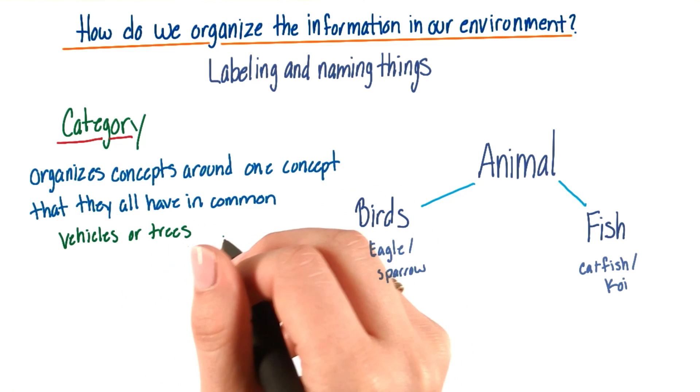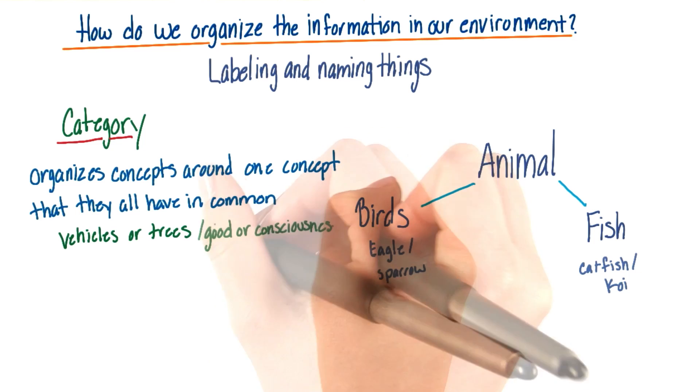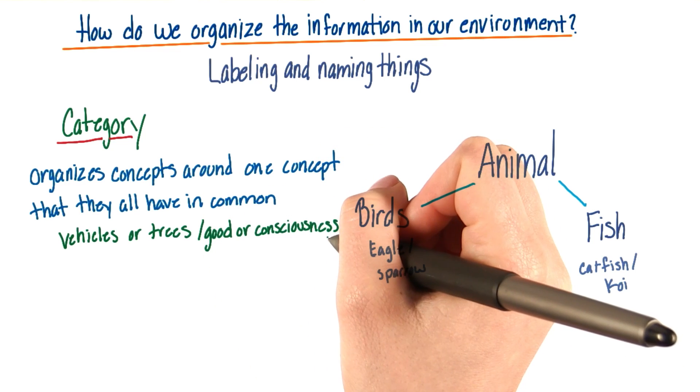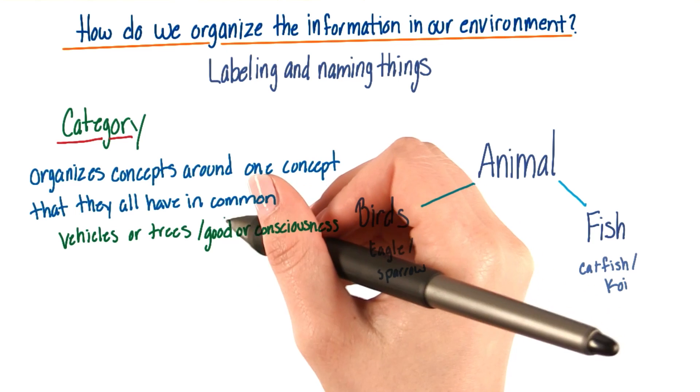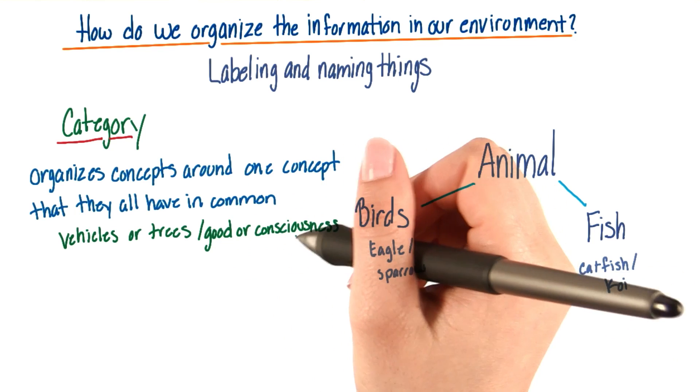These are well defined, but other categories can be kind of fuzzy, such as good or consciousness. It can be difficult to organize other concepts around one of these two concepts.